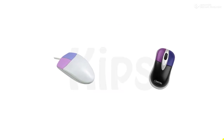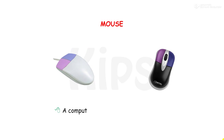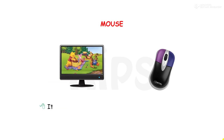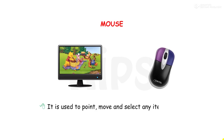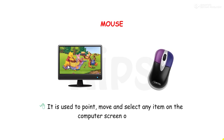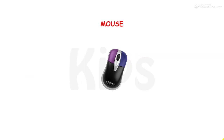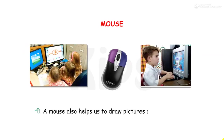Students, let me explain about the mouse. A computer mouse has two buttons on it. It is used to point, move and select any item on the computer screen or monitor. A mouse also helps us to draw pictures and play games.